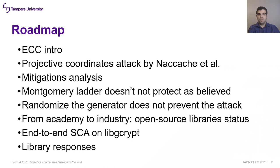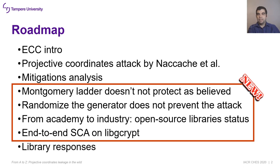In this talk, we are going to analyze the status of the projective coordination leak in the industry and present novel facts about it. First, we describe this attack, then we analyze some mitigations proposed in previous works. As part of this research, we demonstrate that the Montgomery ladder does not offer protection as believed. Similarly, we show that the randomization of the generator does not prevent the attack. In addition, several open source libraries are analyzed regarding this vulnerability. This attack is demonstrated in practice through an end-to-end attack on LibreSSL's EC-DSA implementation.